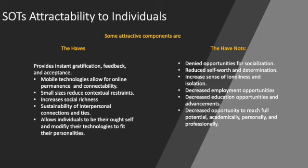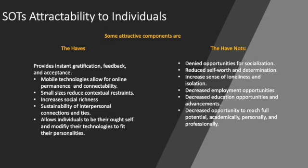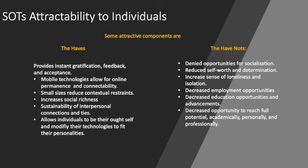As far as the attractability for humans, we use technology for a multitude of things. A few of them could be for instant gratification — some of us need positive feedback, we want to be accepted — so we use social-oriented technologies for those purposes. We use mobile technologies for online permanency, for permanent connections where we're always connected even when we think we're not. The small-size devices have allowed us to change the context of where we communicate, how we communicate, how often we communicate, and how often we socialize ourselves.